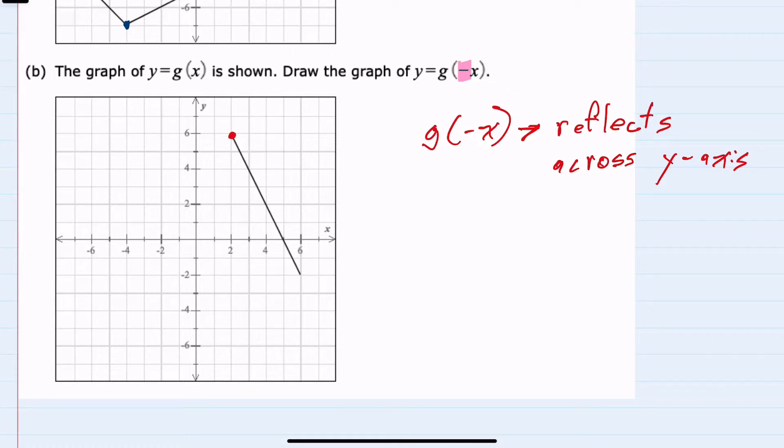So, looking at this point, instead of 2, 6, this would be negative 2, 6. Again, changing the sign of the x value.